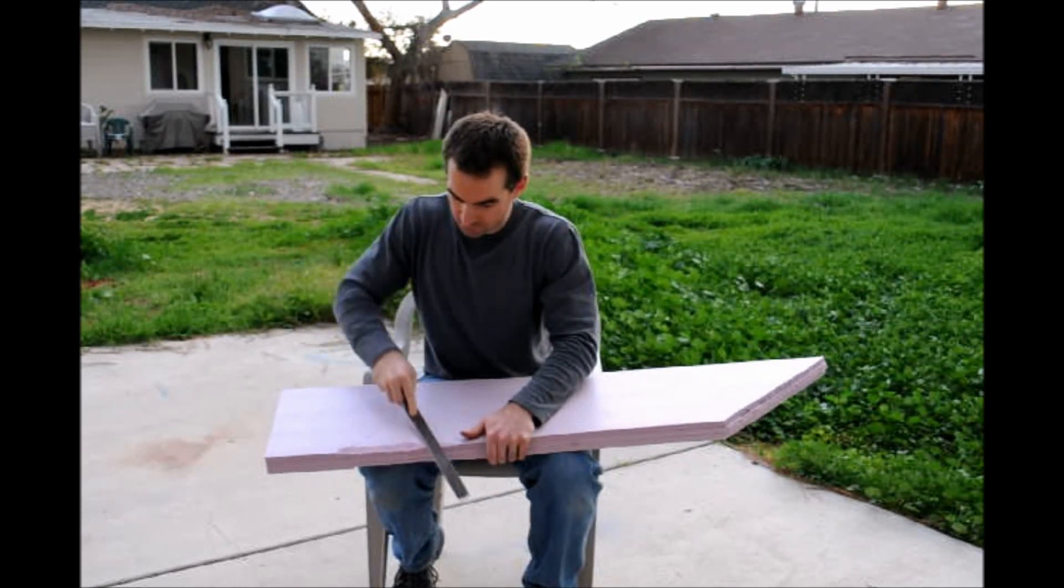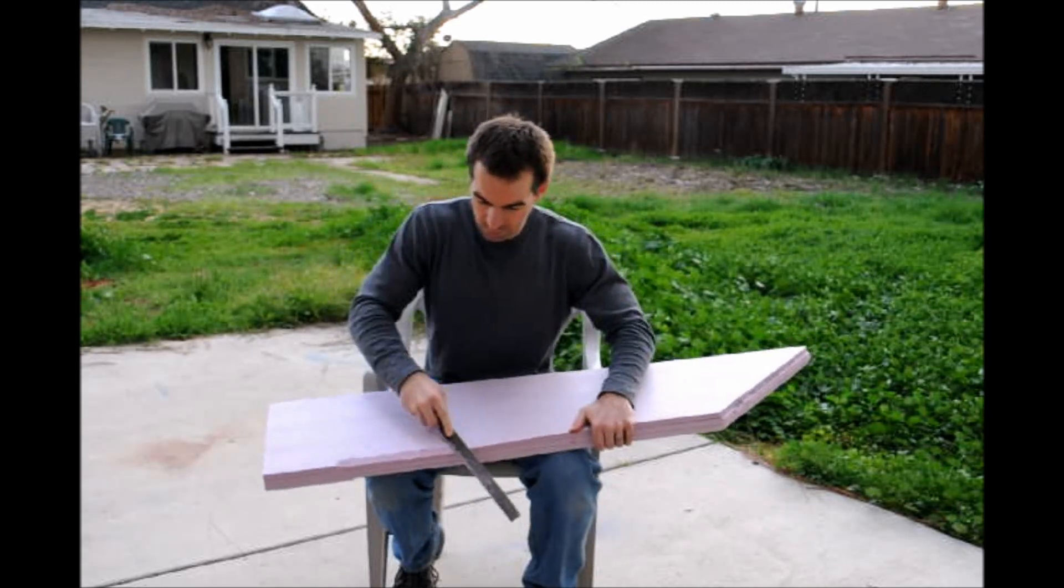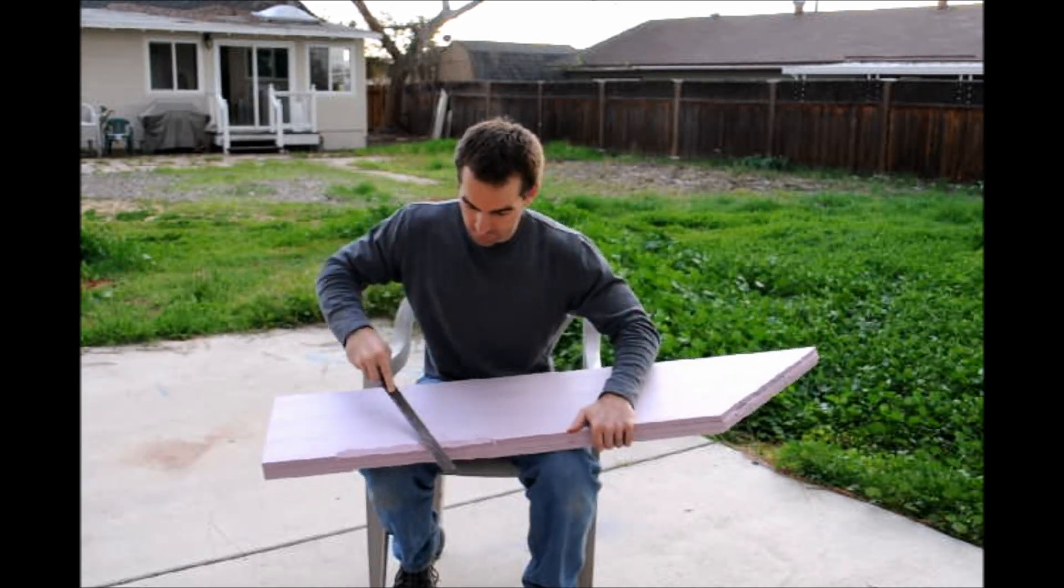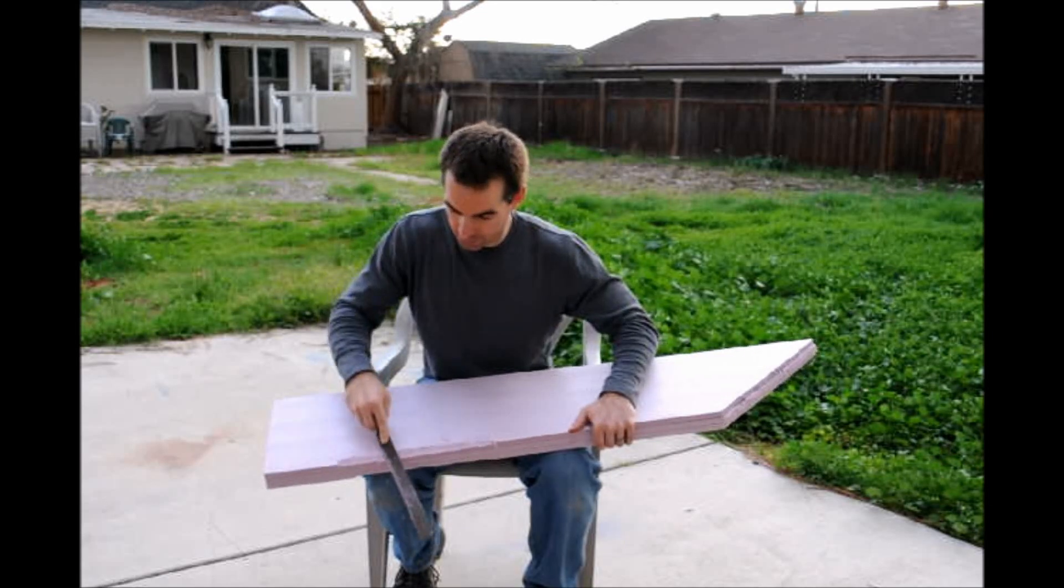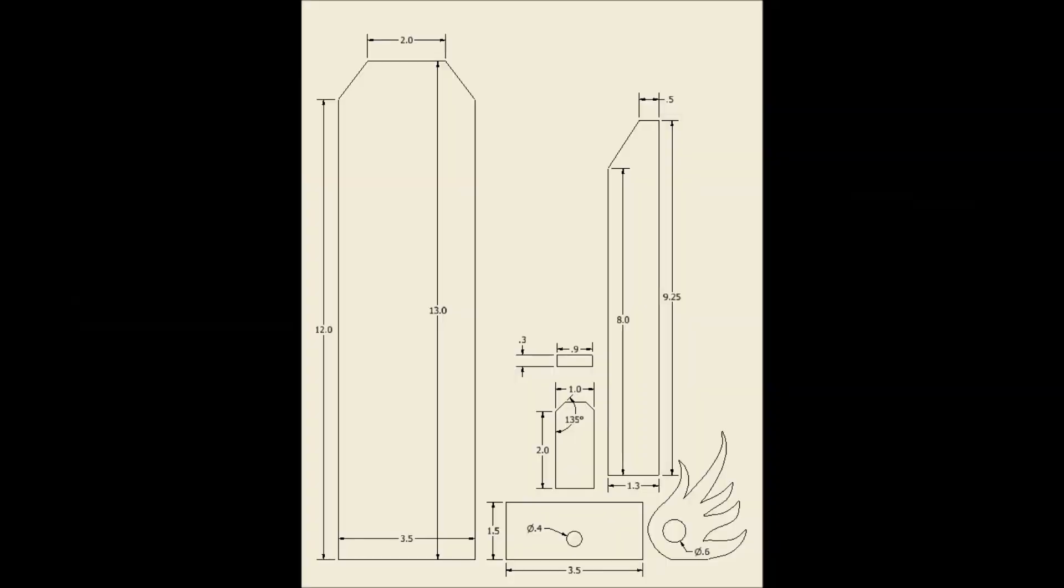Grind until you reach the middle of the center sheet, then do the other side. Leave 5 and a half to 6 inches unfiled for the hilt. Once you're done with the file, use sandpaper to make it all smooth.